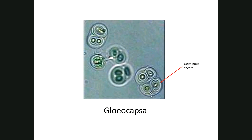Whenever there is a cell of Gloeocapsa, here's a cell, it is surrounded by a gelatinous sheath. Then, when it undergoes division to create more cells, you end up with — here's one round of division — now you have two cells, and each one has a gelatinous sheath of its own, and they maintain the original gelatinous sheath.